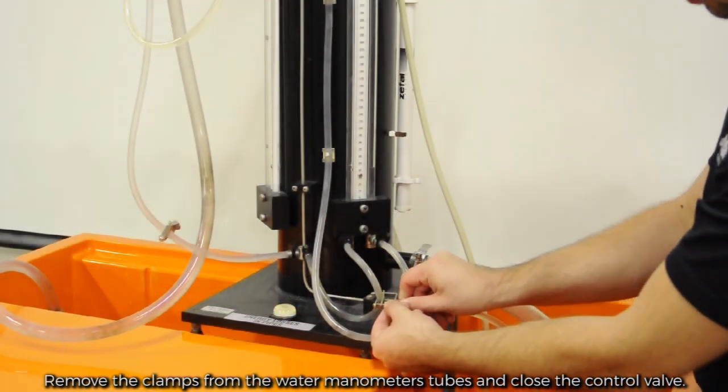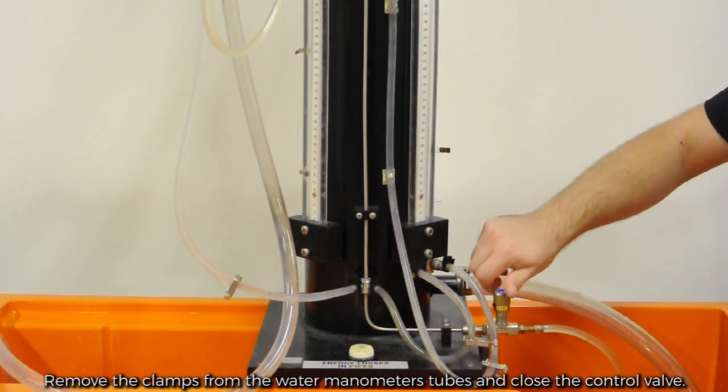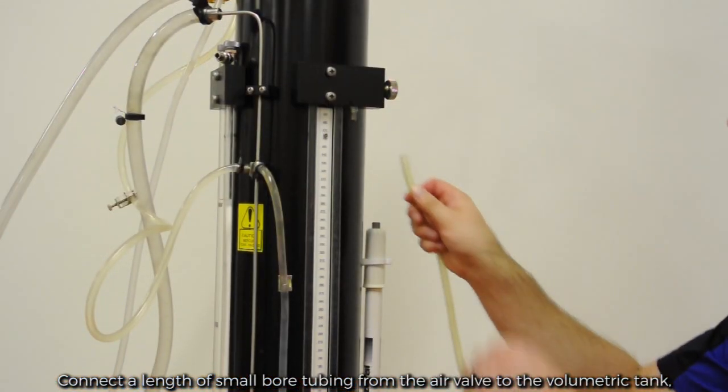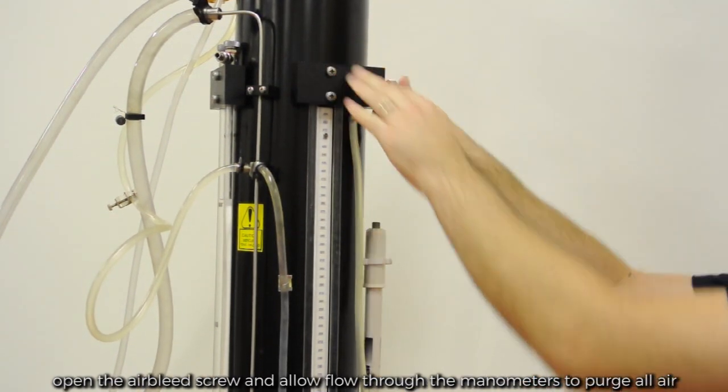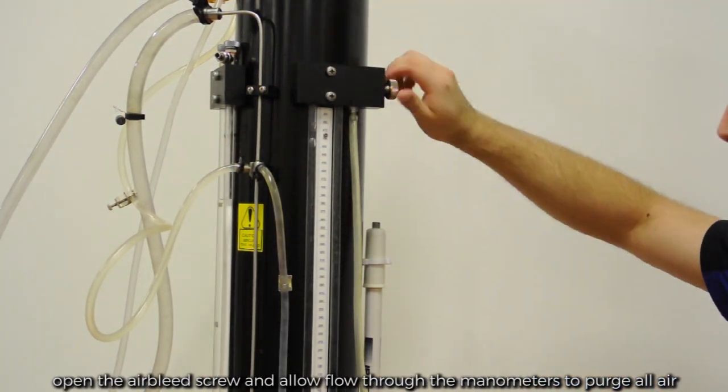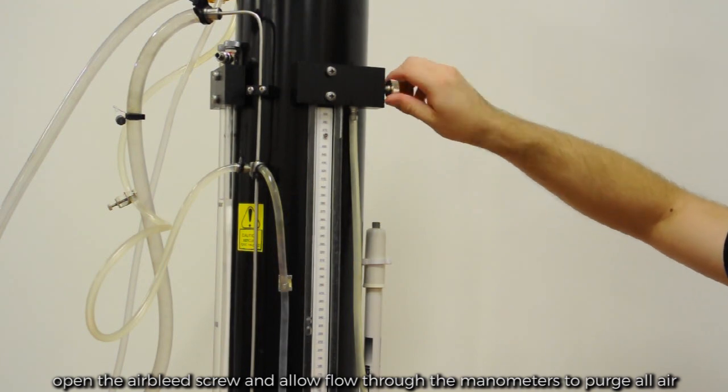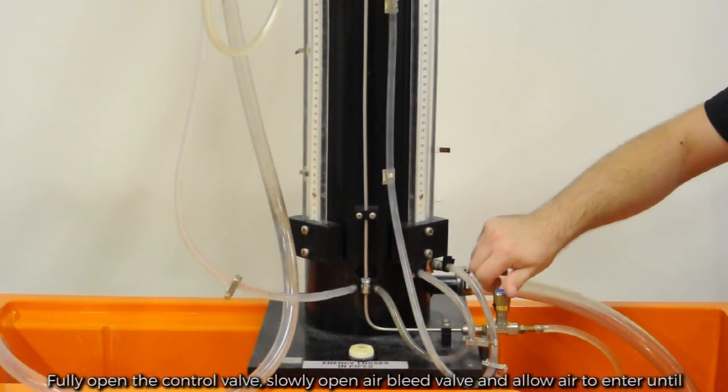Remove the clamps from the water manometer tubes and close the control valve. Connect a length of small bore tubing from the air valve to the volumetric tank. Open the air bleed screw and allow flow through the manometers to purge all air from them. Fully open the control valve.